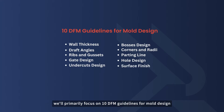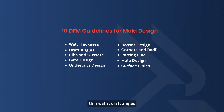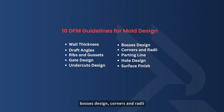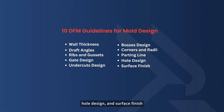In this video, we'll primarily focus on 10 DFM guidelines for mold design, which include wall thickness, draft angles, ribs and gussets, gate design, undercuts design, bosses design, corners and radii, parting line, hole design, and surface finish. Let's analyze them one by one.